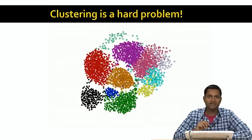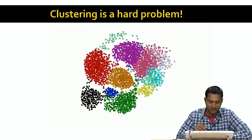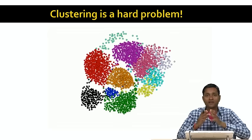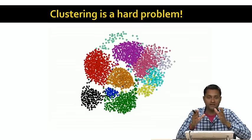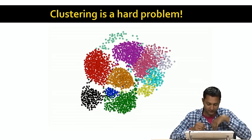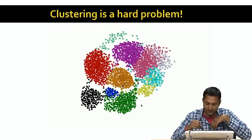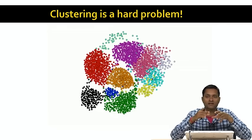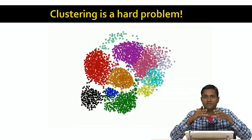That example looked easy, but in general, clustering is a hard problem. Here we have a group of points where the different colors denote different clusters. But unlike the previous example where the clusters were cleanly separated from each other, in this case the clusters actually overlap with each other. For example, there are some blue points among the orange points, and some among the green points. The clusters are kind of smeared over and mix into each other, making it hard to find clear boundaries between them — these are the kinds of real problems we'll have to tackle when dealing with clustering in the real world.